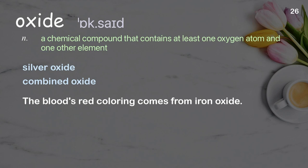Examples: Silver oxide. Combined oxide. The blood's red colouring comes from iron oxide.